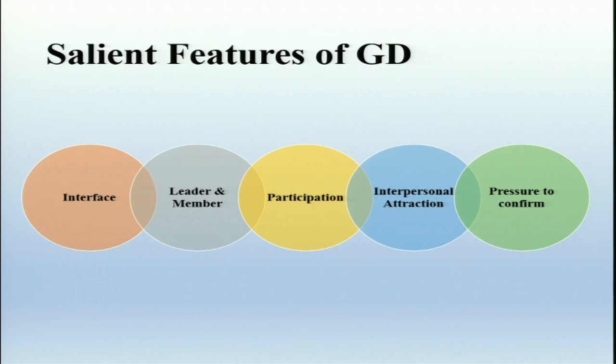Group discussion has certain features. The very first feature is that it provides an interface — it is an interaction among the group members, wherein all of them come up with their thought process, put up their points, and want to prove themselves as leaders with good communication. This interaction and interface is central to what makes a group discussion effective.